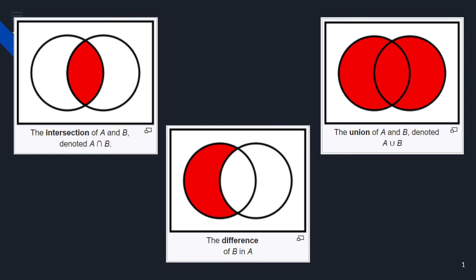If you had experience with sets in mathematics, you probably know what a Venn diagram is. A Venn diagram shows possible relations between two or more sets. On the left image we have two sets, and the red area indicates the intersection of these two sets. In the middle image, the red area indicates the difference of set A with B, and the right image indicates the union of these two sets.